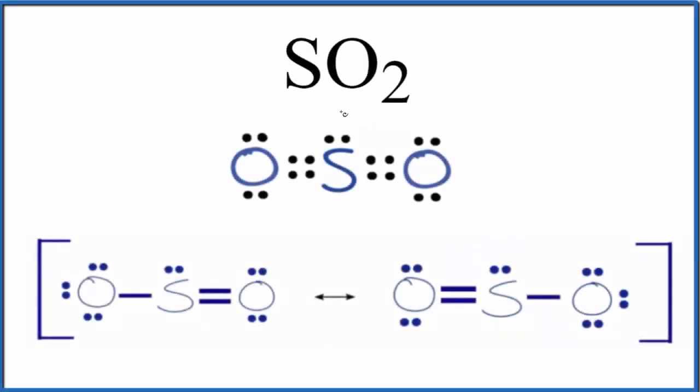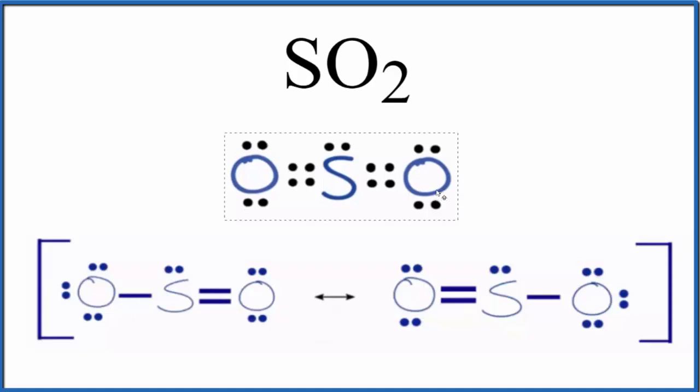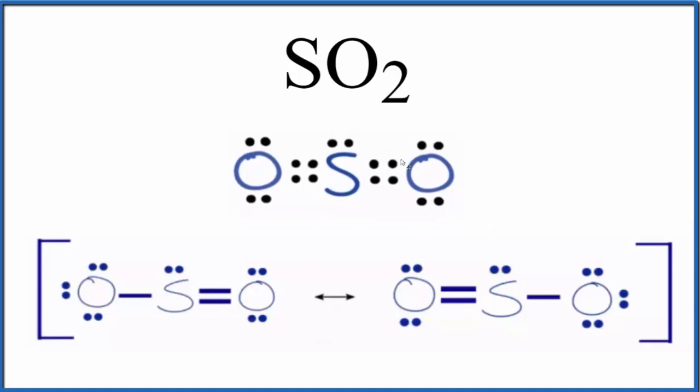Let's look at the number of lone pairs and bonding pairs for SO2, sulfur dioxide. First off, you may see the Lewis structure written like this here. This would be the best Lewis structure from an academic standpoint where we've minimized our formal charges.